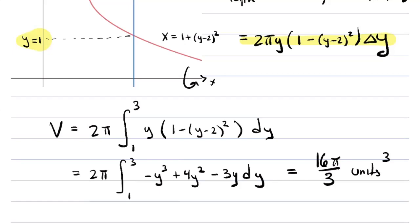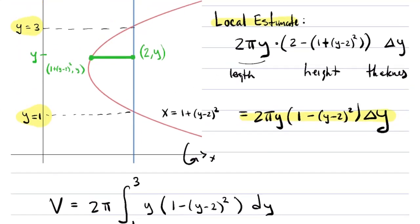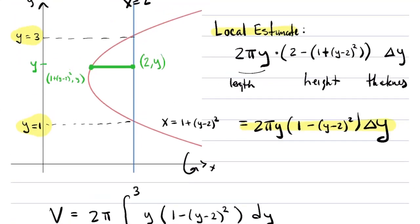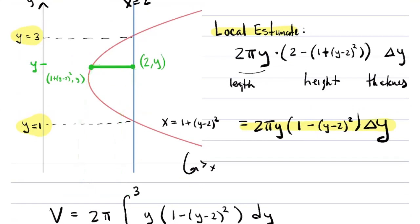Hopefully that example illustrates that there's not really a big new idea if you're trying to use shells around the x-axis. The integral ends up being with respect to y because, when we look at that shell for a given y to revolve around the axis, it depends on y, not on x. The height of the shell — where the shell comes from — depends on y, not x.